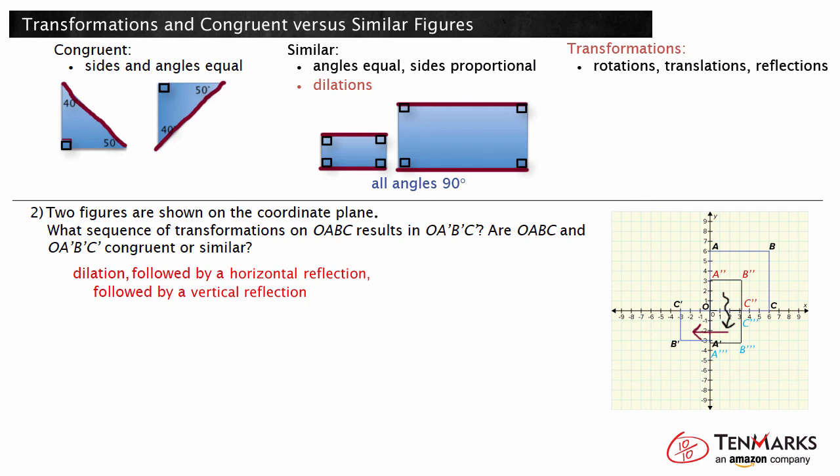The transformation included a dilation, which produces similar figures. Therefore, O, A, B, C and O, A', B', C' are similar figures. Now you know how to use transformations to determine if two figures are congruent or similar. Thanks for watching.